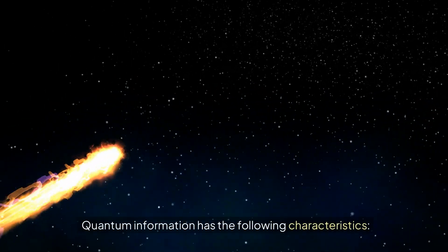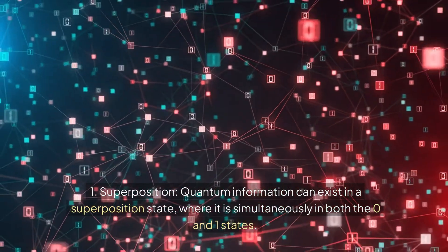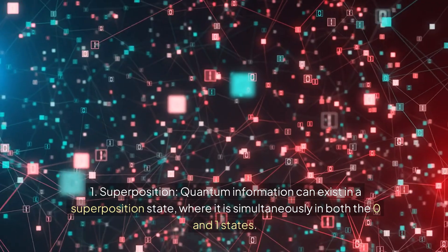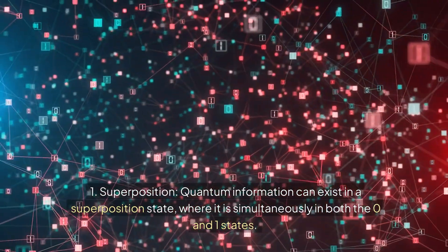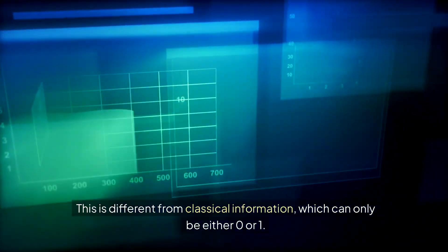Quantum information has the following characteristics. Superposition: quantum information can exist in a superposition state, where it is simultaneously in both the zero and one states. This is different from classical information, which can only be either zero or one.